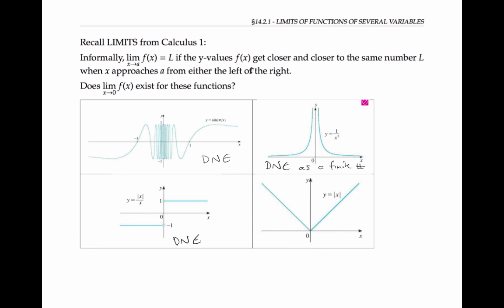In this last case, the limit does exist: the limit as x goes to zero of f of x is zero, because as the x values approach zero from both the right and the left, the y values are heading towards zero. The issues that come up in calculus one — limits going to infinity or limits being different from different sides — these same issues can arise for functions of several variables.